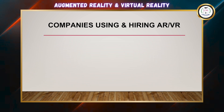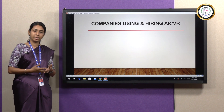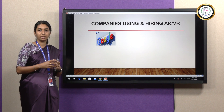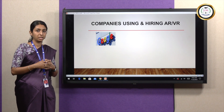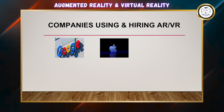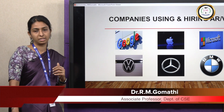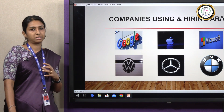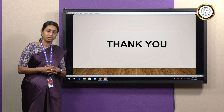Finally, are companies using and hiring AR and VR? The answer is yes — these technologies are part of our daily lives. For example, Google uses AR and VR technology in products like Google Lens, Google Maps and Google Earth to enhance and simulate search results. Other companies hiring and using AR/VR technology include Apple, Microsoft, Volkswagen, Mercedes-Benz and BMW. Automobile industries use these technologies to design fully automated cars controlled by voice assistants or gestures. I hope this video has given a few insights about Augmented Reality and Virtual Reality. Thank you.